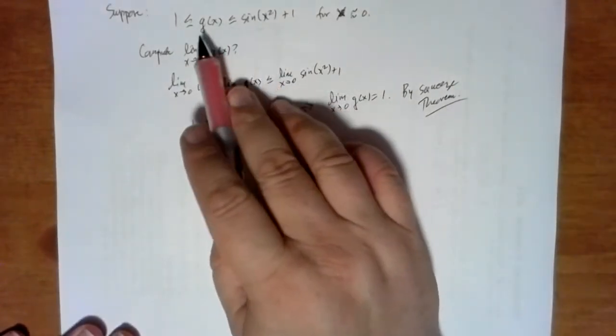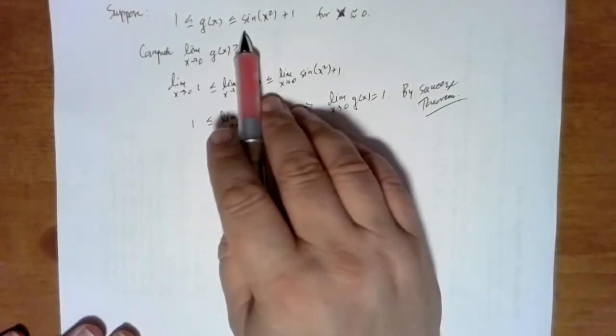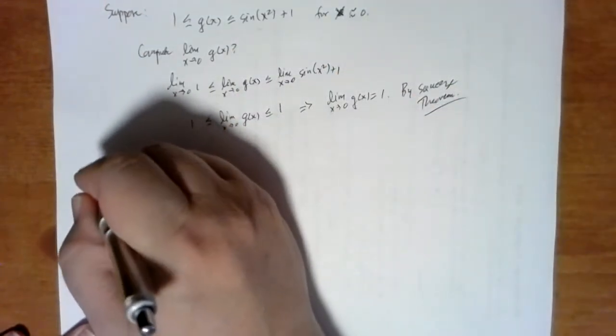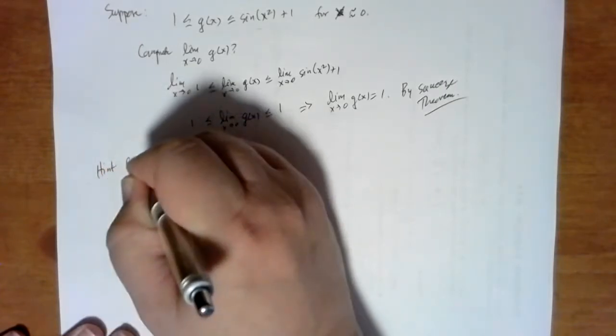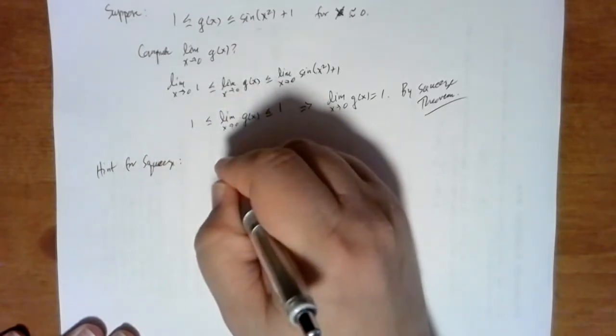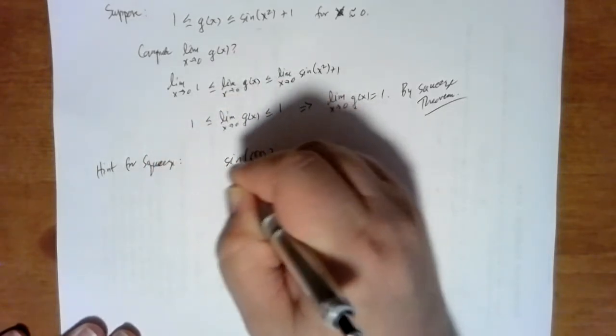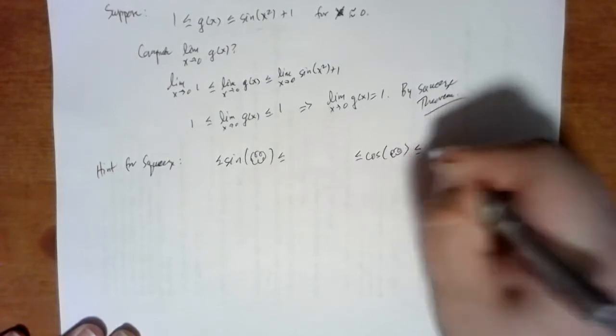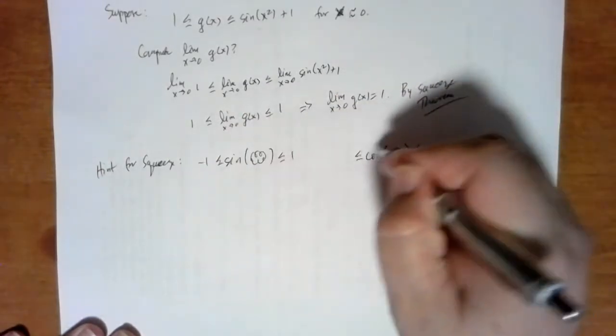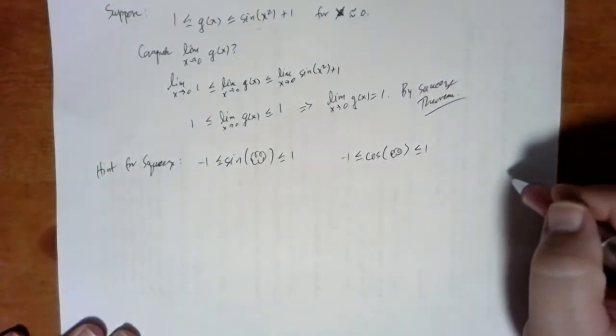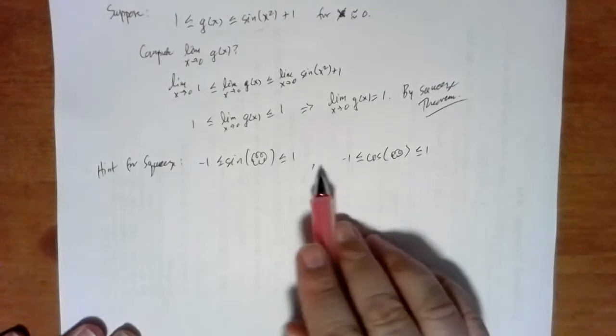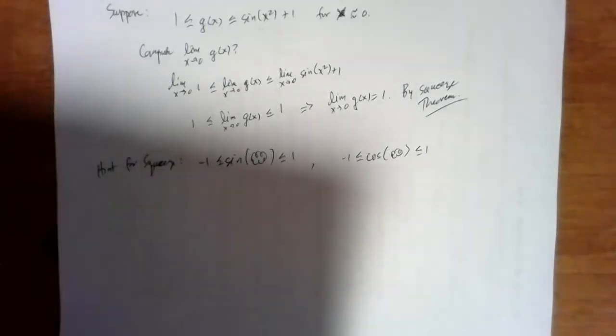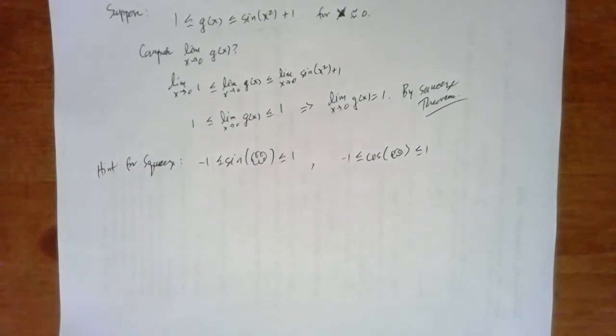When you're using the squeeze theorem, the hardest thing is to come up with the upper and lower functions. So this one was kind of easy because it was given. Typically, the thing you want to remember is that both the sine of anything and the cosine of anything are stuck between minus 1 and 1. And so these will typically give you your upper function and your lower function. That's kind of mysterious, but I guess I could give an example.